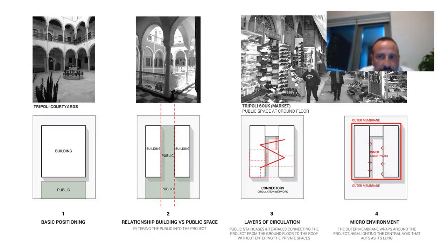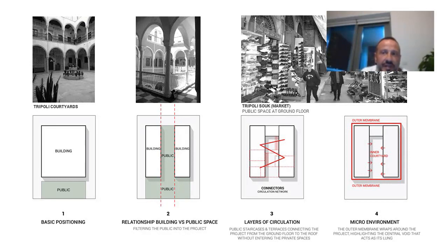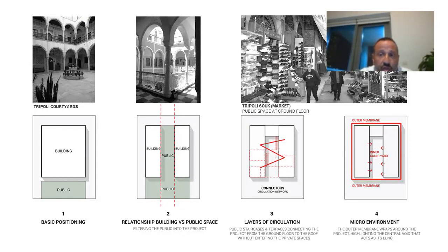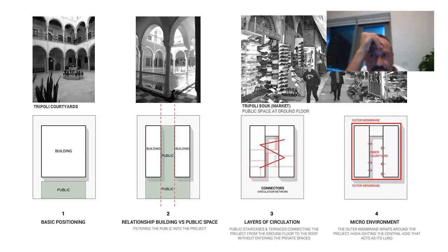We started the design by positioning the building based on building regulations and zoning ordinance, then generated a public axis that infiltrates through the volume, inspired by the souk typology. Multiple layers of stairways and outdoor terraces allow the public to navigate all spaces without entering the private areas of the building, weaving a thin thread between public and private. Finally, an outer membrane encloses the building inspired by the courtyard typology, accentuating the inner void that acts as the lung of the project.